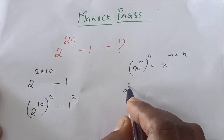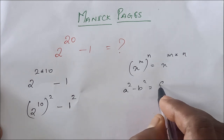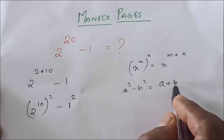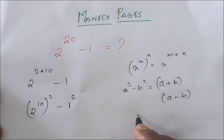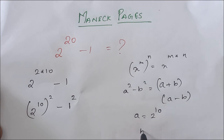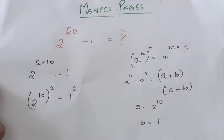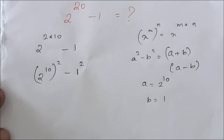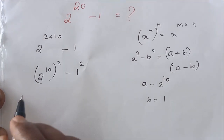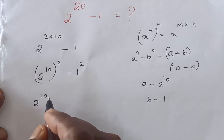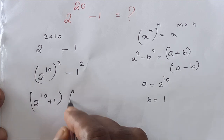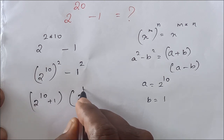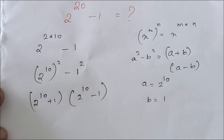We know a square minus b square is nothing but a plus b into a minus b. Here a is nothing but 2 power 10, and b is nothing but 1. So we can rewrite this as 2 power 10 plus 1, into 2 power 10 minus 1.